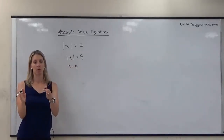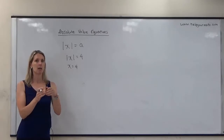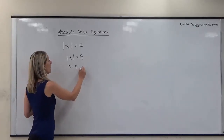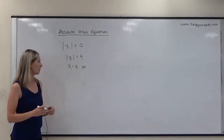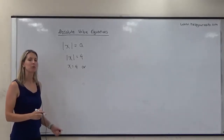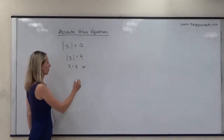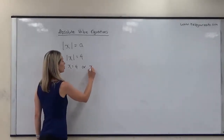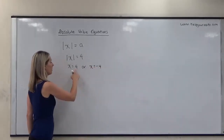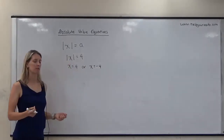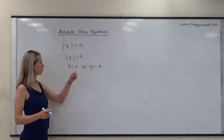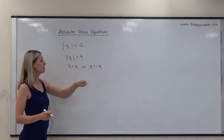But 4 is four units from zero on one side — what about the other side of the number line? That would be x is equal to negative 4, so this equation has two solutions. If we plug in 4, the absolute value of 4 is 4, which makes it true.